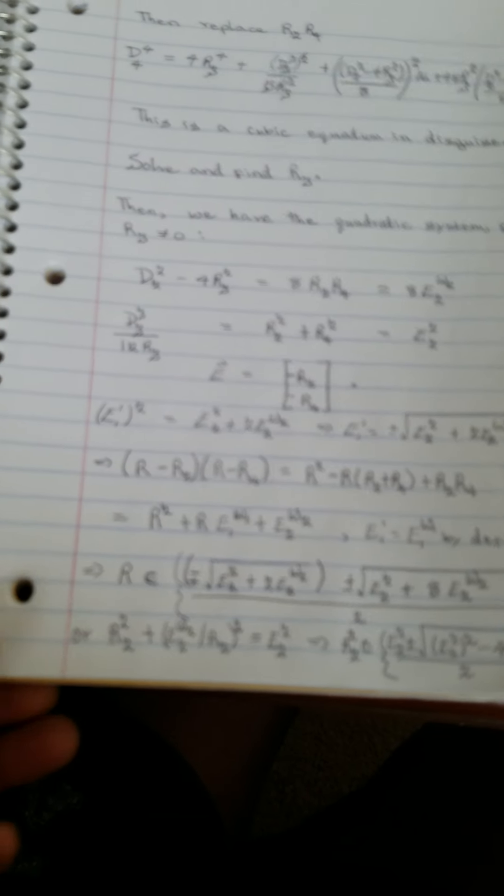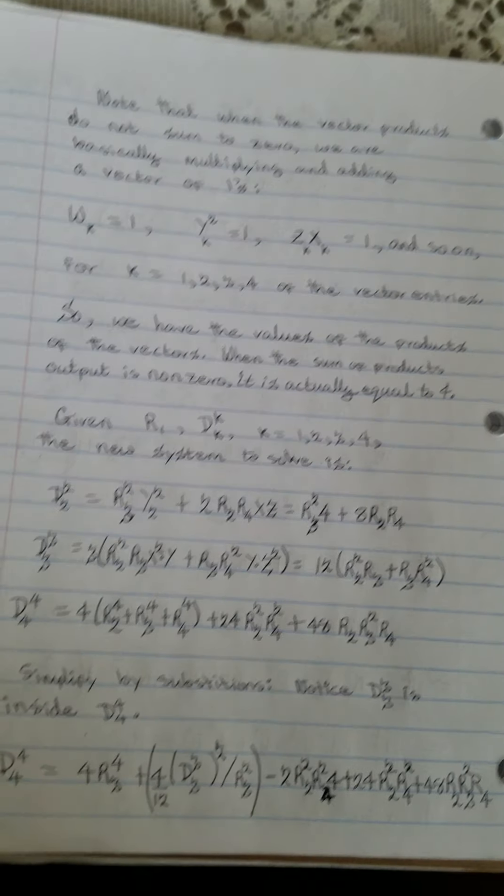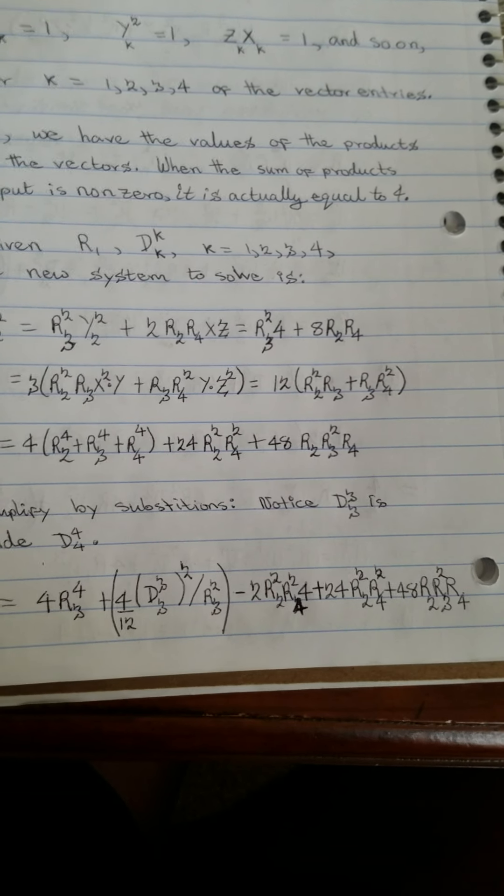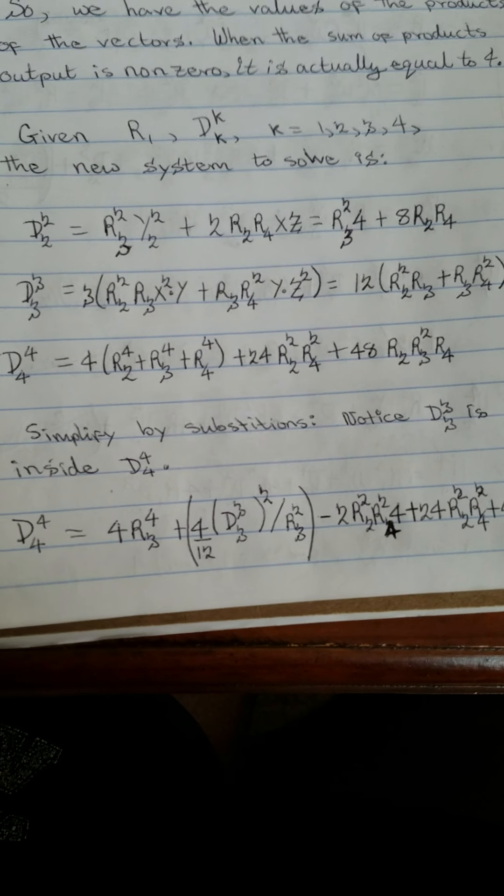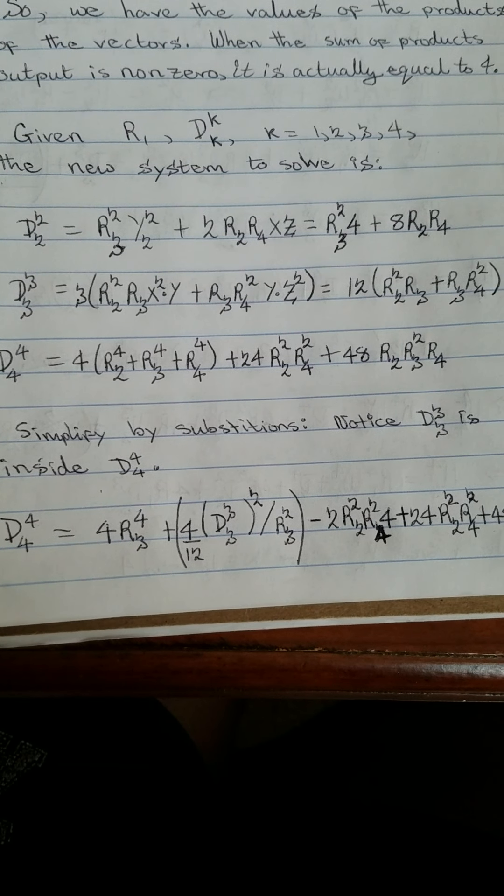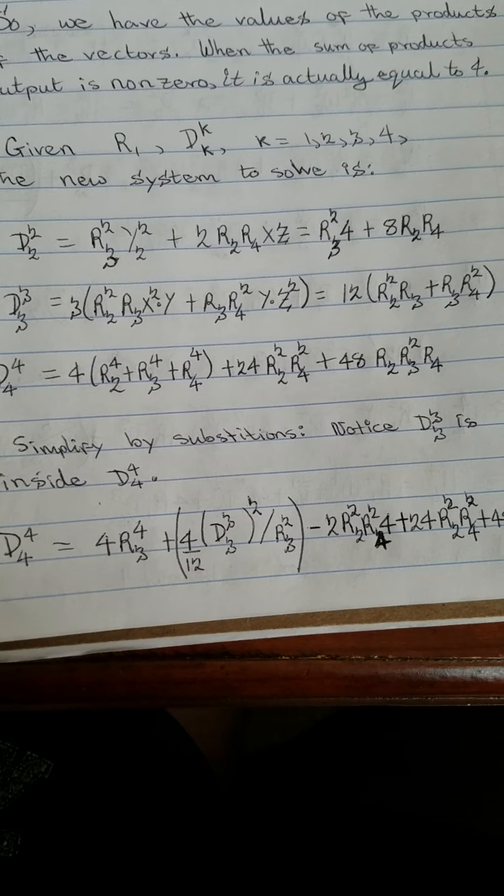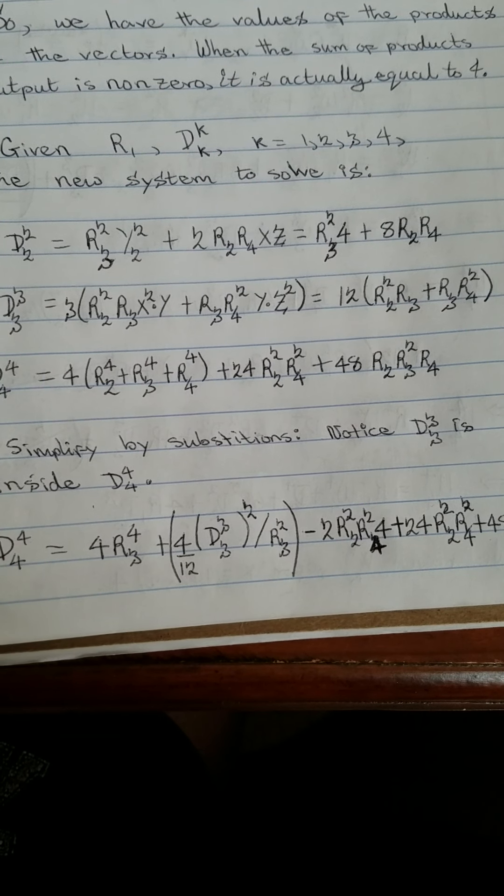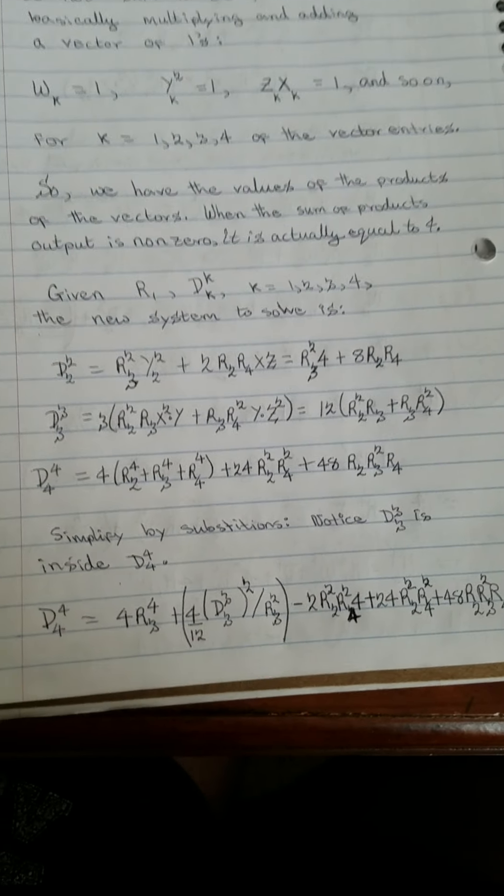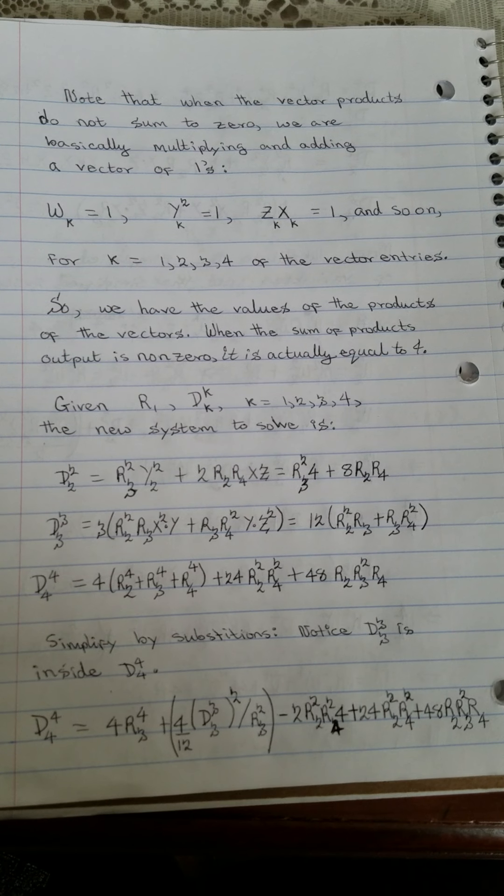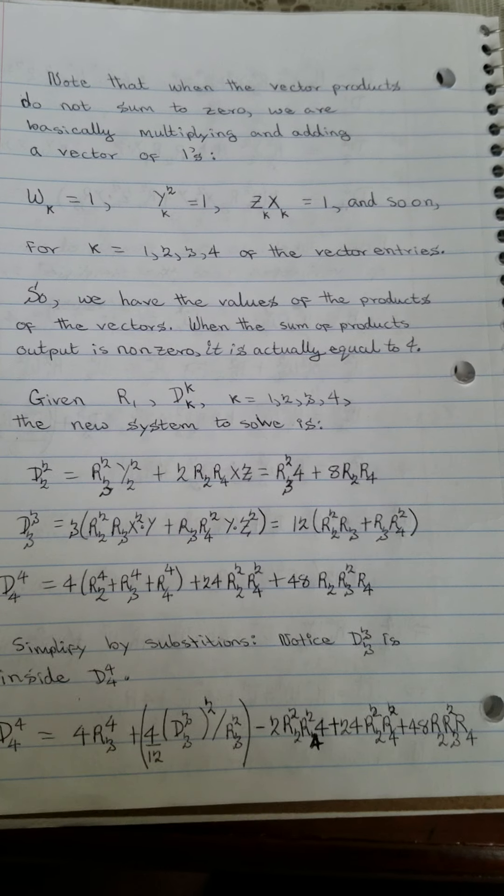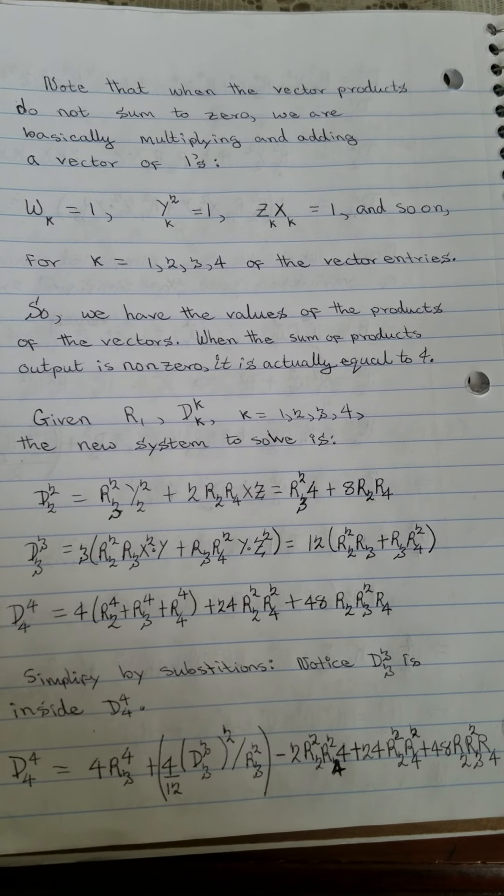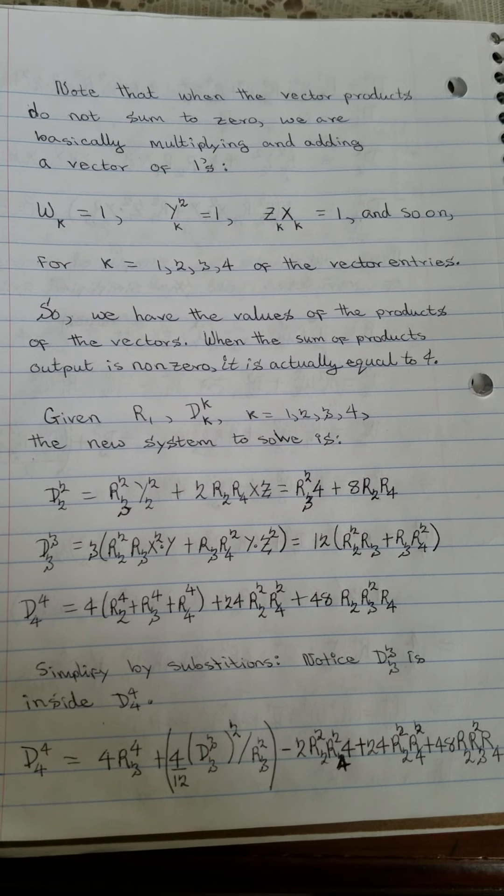Now after getting the values for dkk, we can go to the change of variables system and start looking for r3, for r2, for r4.